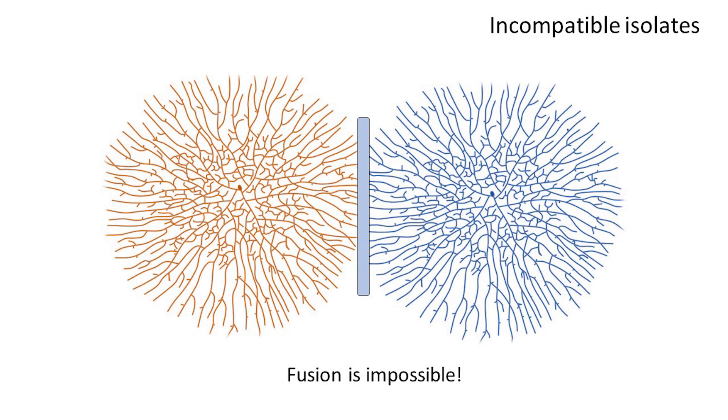And second, if two colonies are genetically different at non-self-recognition genes, fusion will be halted and the mixing of cytoplasm throughout both colonies will be prevented.